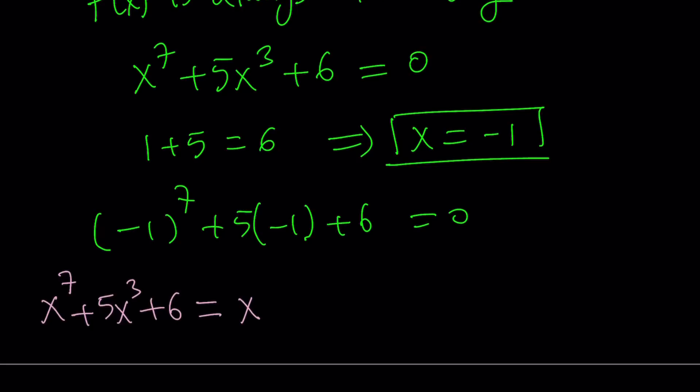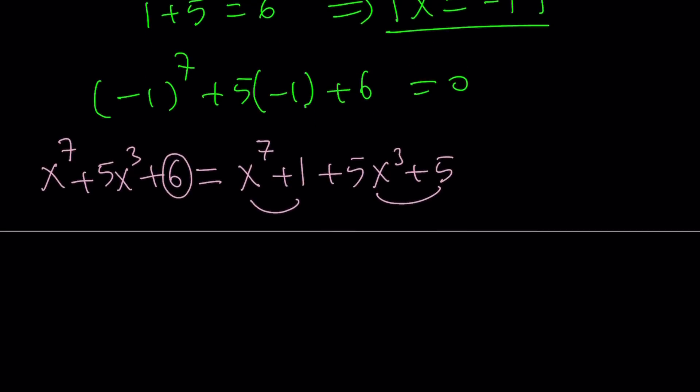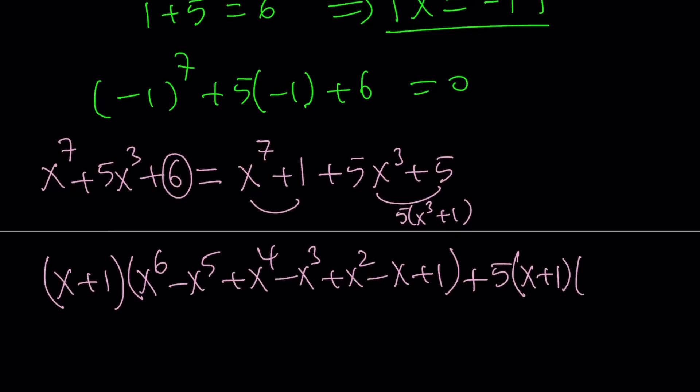But we know x equals negative 1 is a solution, so I can write this as x to the seventh plus 1. So kind of like, I'm going to split up the 6, and that makes sense, because 6 can be written as 1 plus 5. And when I do that, you can immediately see that this can be factored by grouping. x to the seventh plus 1 is a sum of two odd powers. So it's factorable. We can write this as x plus 1. The other factor is going to alternate. x to the sixth minus x to the fifth plus x to the fourth minus x cubed plus x squared minus x plus 1. And this one right here is 5 times x cubed plus 1. So we can kind of write it like this. And then x cubed plus 1 is a sum of two cubes. Therefore, we can factor it like this. x cubed plus 1 can be factored into x plus 1 times x squared minus x plus 1.